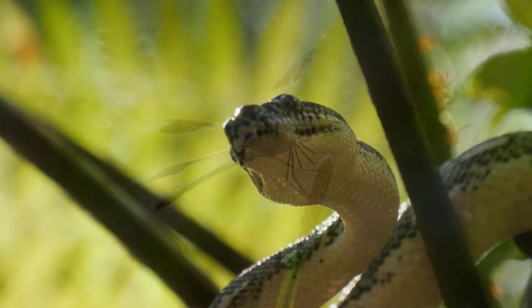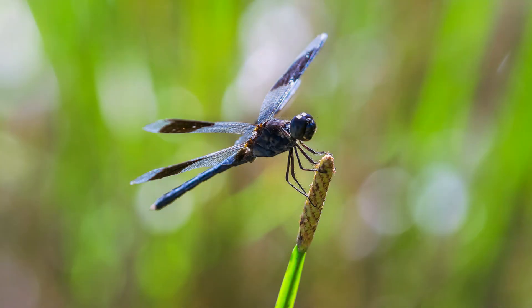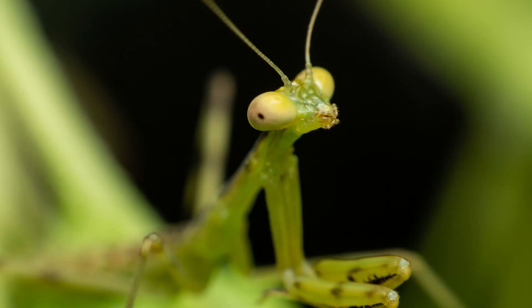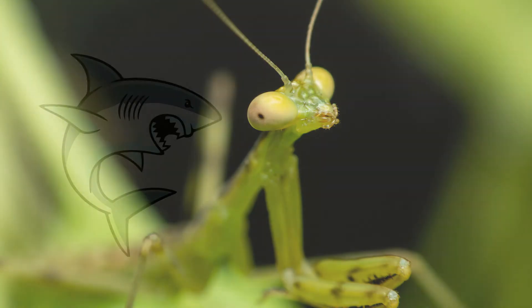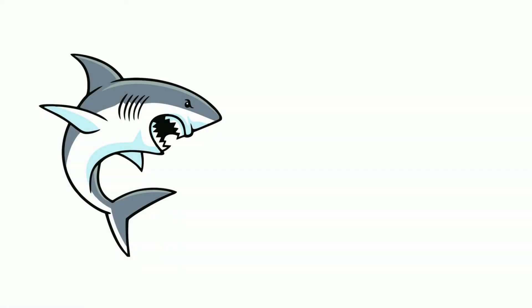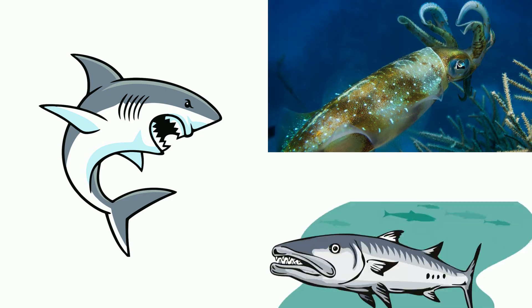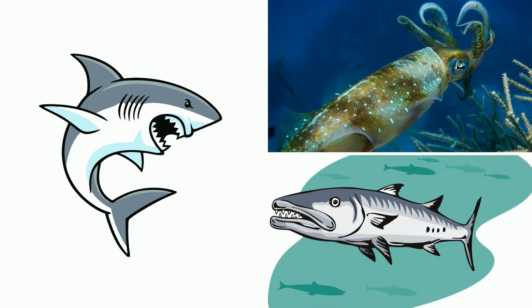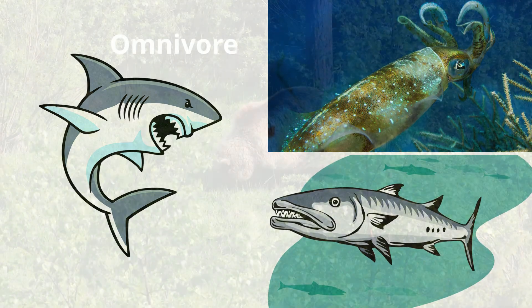However, some insects like a dragonfly and praying mantis are carnivores. The ocean also contains a large number of carnivores like sharks, squid, and barracudas.